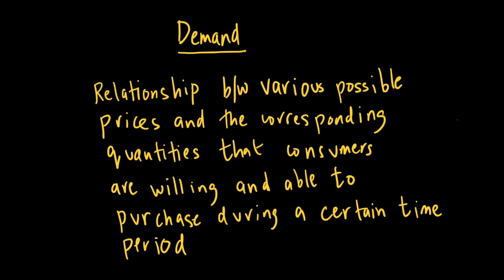There are some key words in the definition. The first is that it shows the relationship between various possible prices and the corresponding quantities. We change prices and we see how quantities bought are changing. So this is a relationship between price and quantity bought. Importantly, it shows what consumers are willing and able to buy.